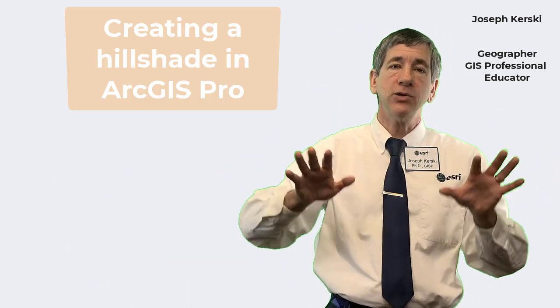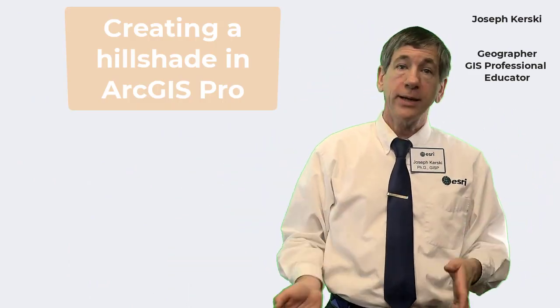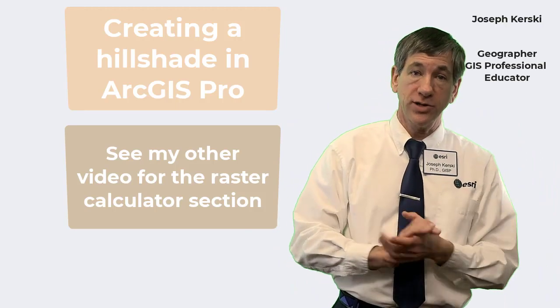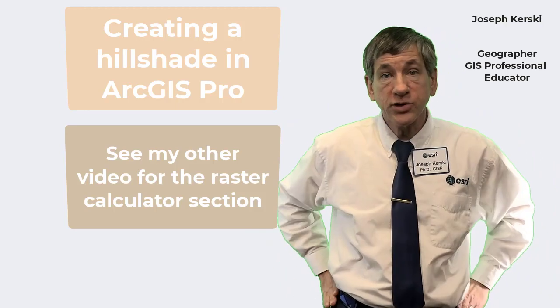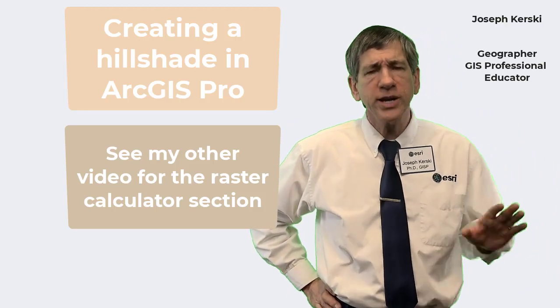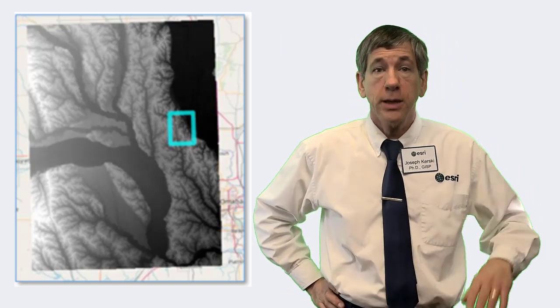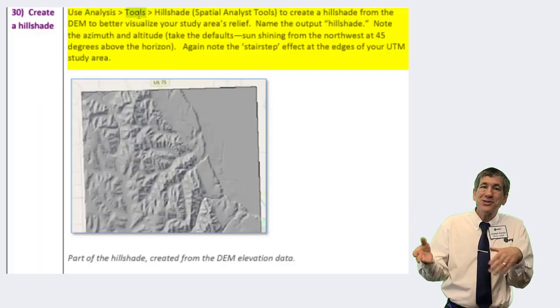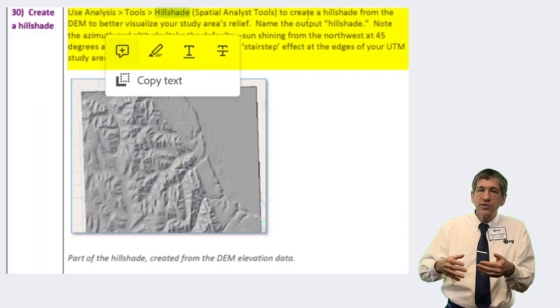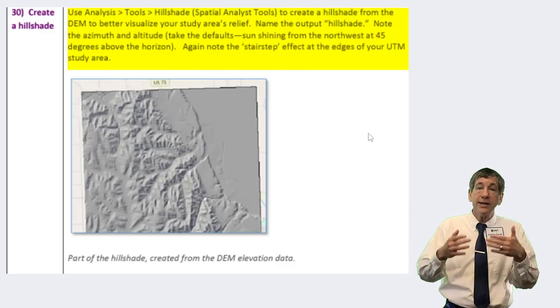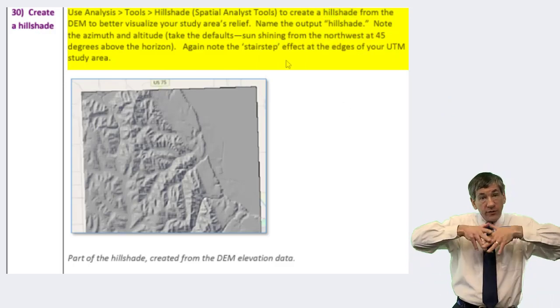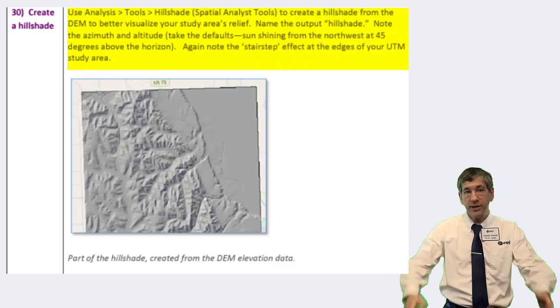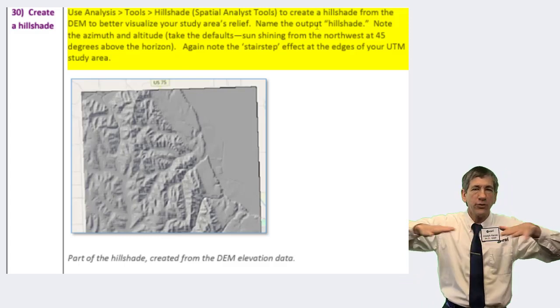Hi folks, Joseph Kursky here with you. Let's chat about creating a Hill Shade in ArcGIS Pro and using the Raster Calculator in ArcGIS Pro. It's rather straightforward to create a Hill Shade. A Hill Shade is a wonderful visualization tool with a digital elevation model or a DEM in your ArcGIS Pro table of contents and geodatabase. Use Analysis Tools Hill Shade to create a Hill Shade from the DEM to better visualize your study area's relief or landforms.